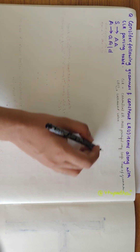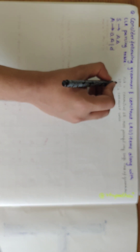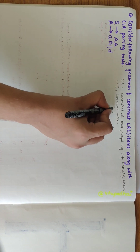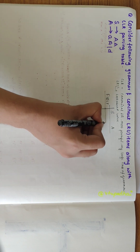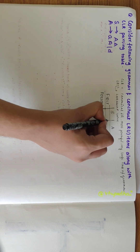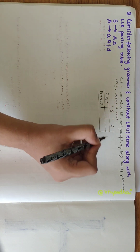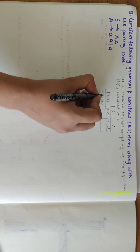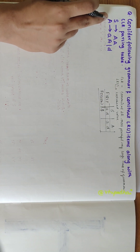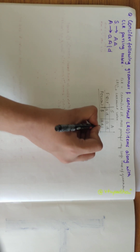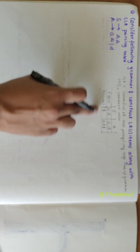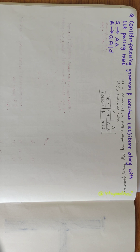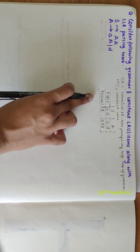Before we proceed to finding the LR1 items, our first step is to find out the FIRST and FOLLOW of the non-terminals. Here we have non-terminals S and A. FIRST of S is {a, d}, FIRST of A is {a, d}, FOLLOW of S is {$}, and FOLLOW of A is {a, d, $}. If you want to understand how I obtained FIRST and FOLLOW, refer to my previous videos where I explained the steps and algorithm.